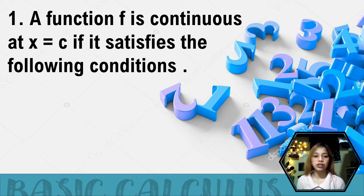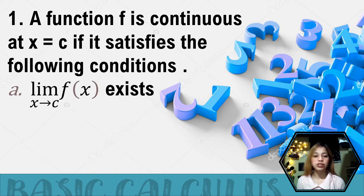First, a function f is continuous at x = c if it satisfies the following conditions. First, the limit of the function as x approaches c exists — the limit of the given function must be defined. It must not be infinitely undefined or indeterminate.